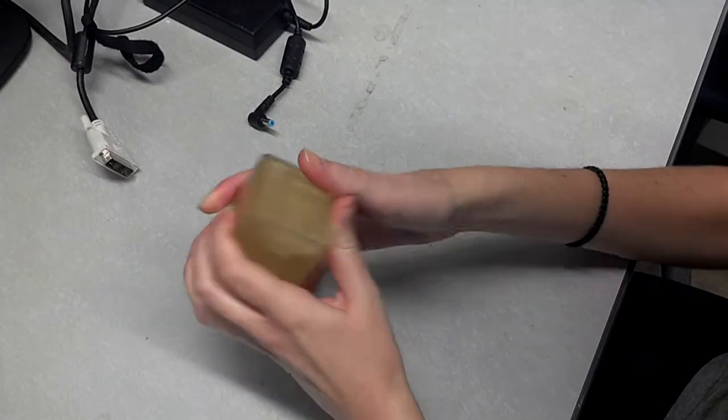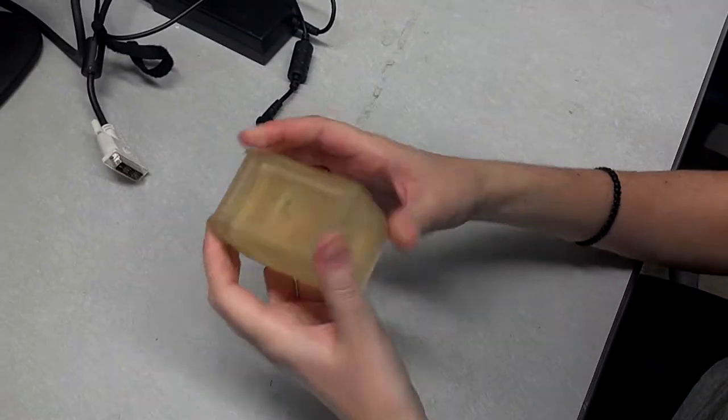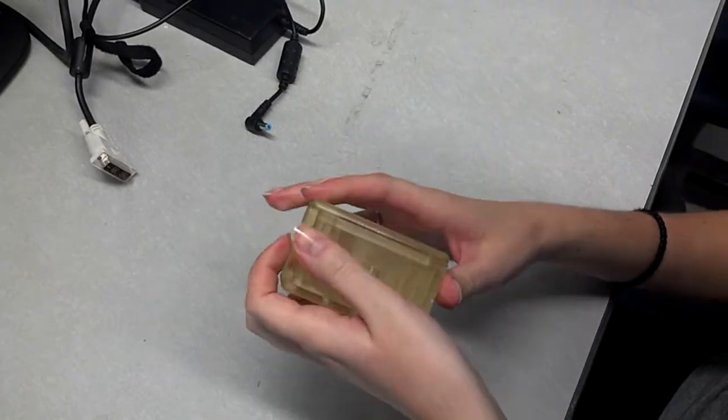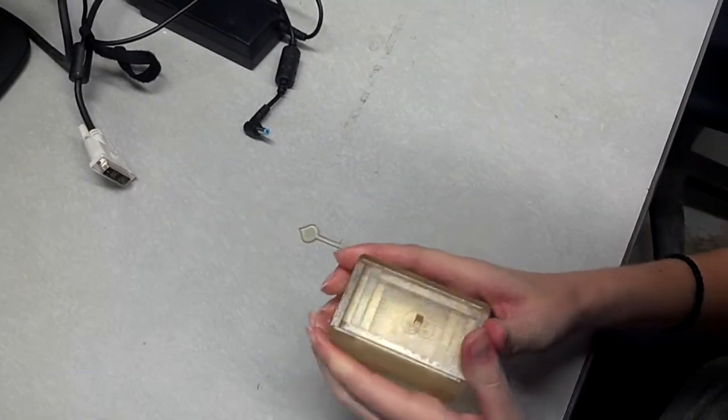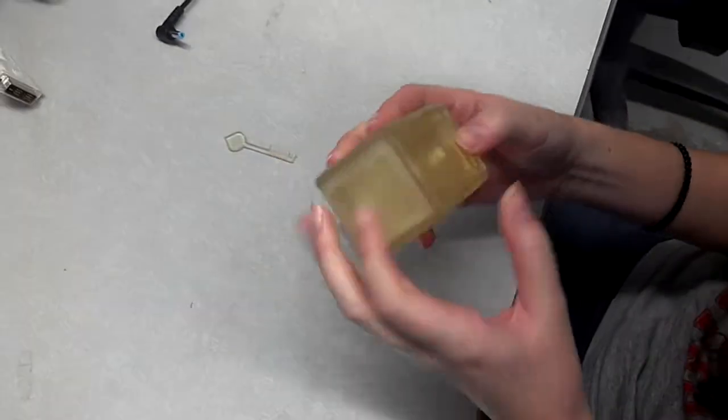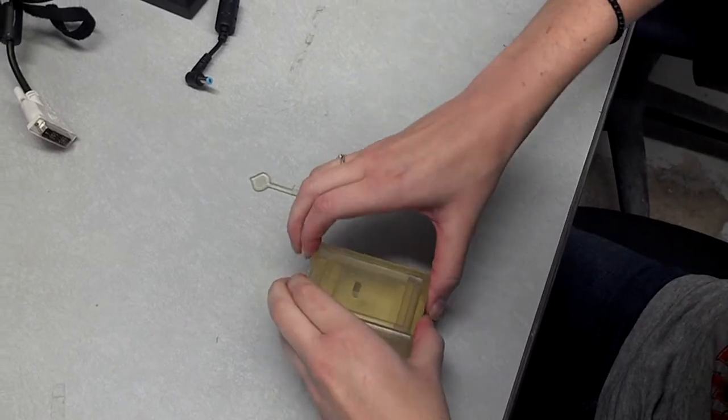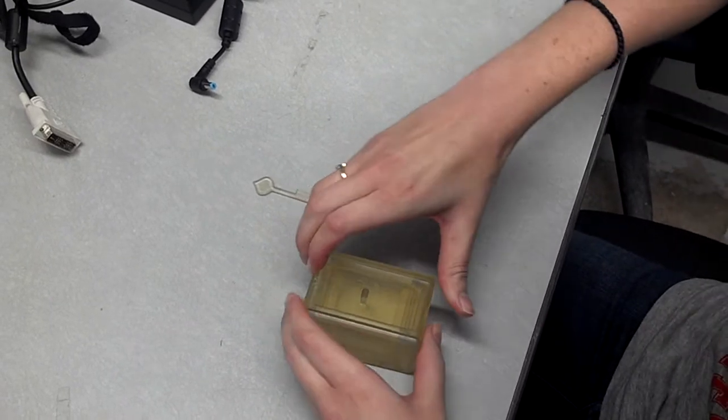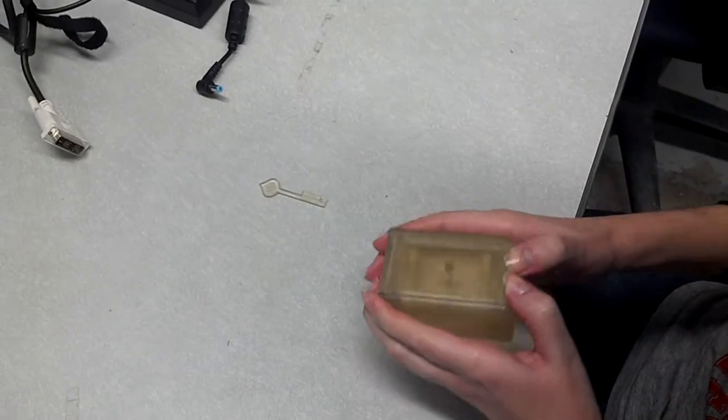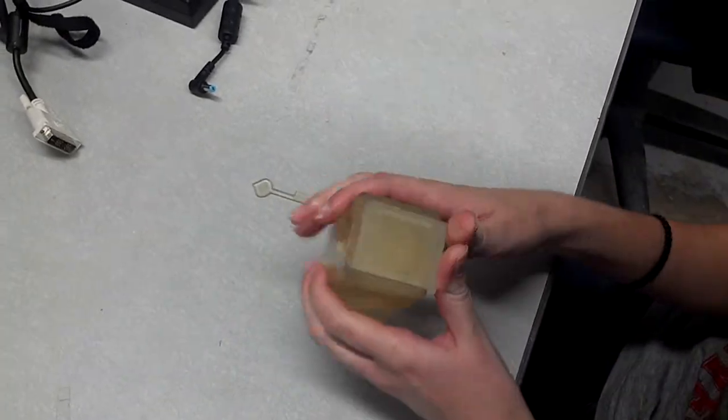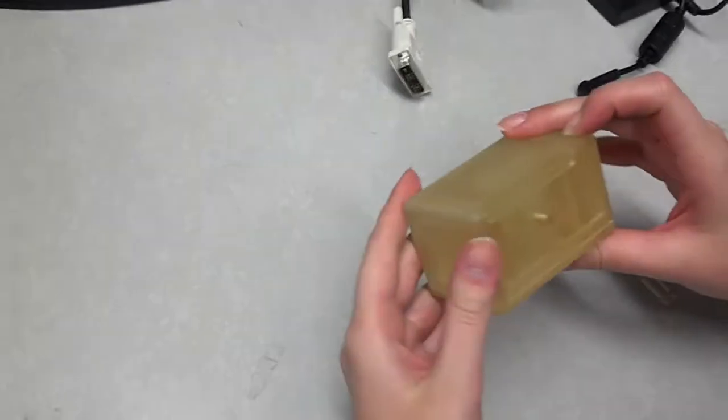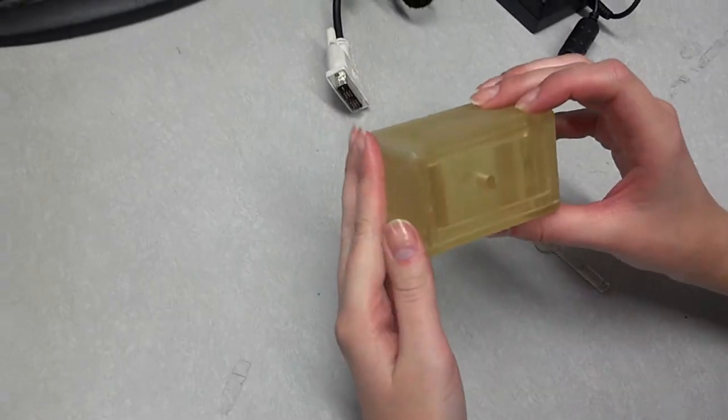And then now everything's gonna should snap in place. The top's just a little tricky. It just gets really tight right there. There we go. And that slides up. And there you have your traditional Japanese puzzle box. It's kind of cool.